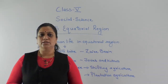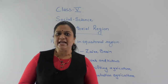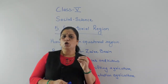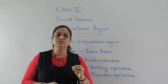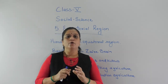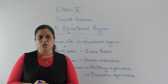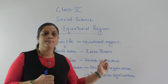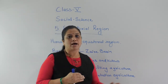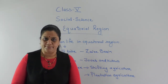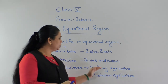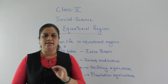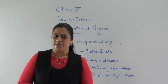In plantation agriculture, crops like tea, coffee, and rubber — that is, crops which are used for commercial purposes — are grown in abundance. Mostly the crops grown in plantation agriculture are used for commercial purposes. These are the two types of agricultural activities practiced in the equatorial region.